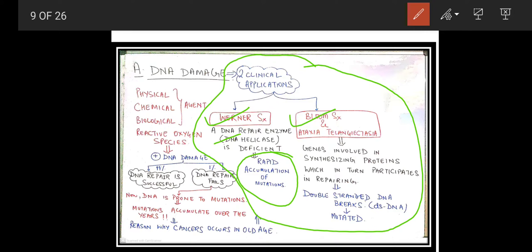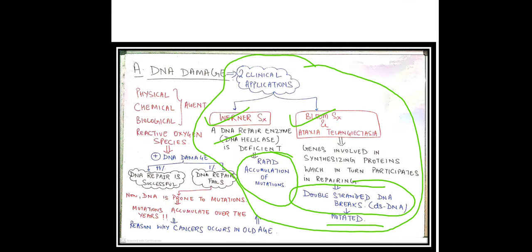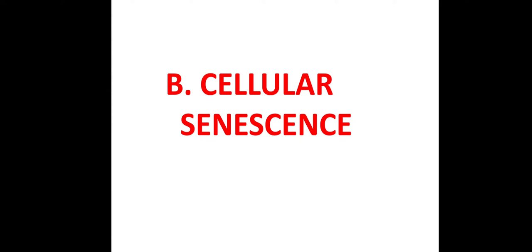In Bloom syndrome and Ataxia Telangiectasia, the genes involved in synthesizing proteins that repair double-stranded DNA breaks are defective. Most double-stranded DNA breaks are caused by UV rays. Normally we have DNA repair genes to repair these breaks, but persons suffering from these conditions show premature aging and develop cancers at a very young age because of accumulation of mutations.